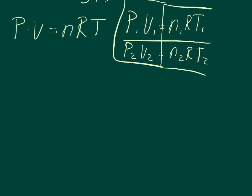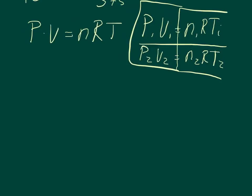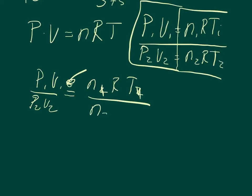So I'm just going to move this up out of the way, and we're going to say that P1 V1 over P2 V2 equals N1 R T1 over N2 R T2. And now there's a couple of things that we can do to start off with.